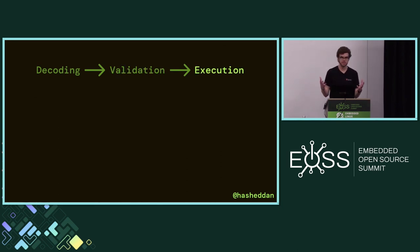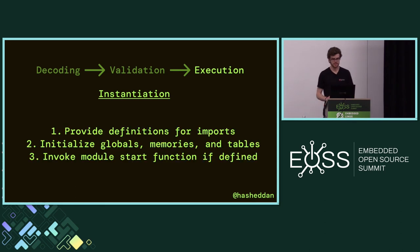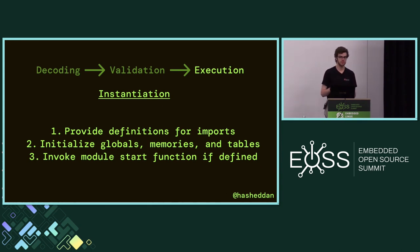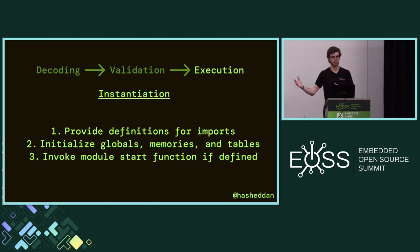Then you move into execution, which is really what we care about. We want some functionality out of this WebAssembly module. There are two steps to execution: instantiation and then invocation. Instantiation is exactly what it sounds like — you need to provide definitions for imports, initialize globals and memories, and if the WebAssembly module has a start function, that is typically run during instantiation. There is some variability between WebAssembly runtimes as to whether that happens, revolving around security and whether you want to execute a function during instantiation or wait for invocation.